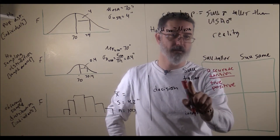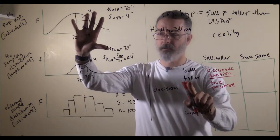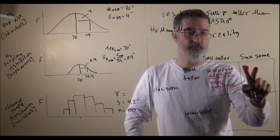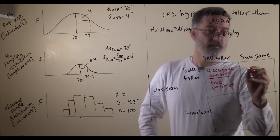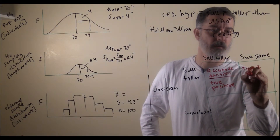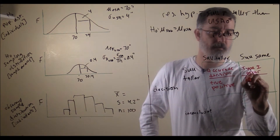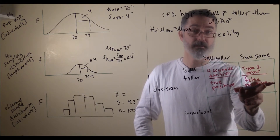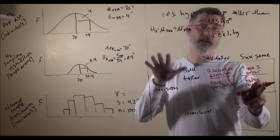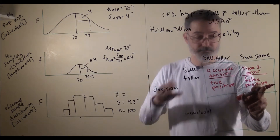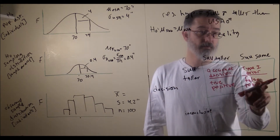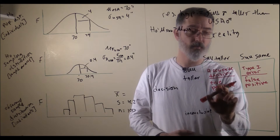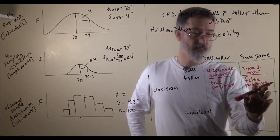But it is also possible that we could decide that SUU men are taller based on our statistical analysis, when in reality SUU men are just as tall as American men. In that case, we have made a decision error, and this one is called a type 1 error, also known as a false positive. When this happens, our data supports the research hypothesis, but in fact the research hypothesis is wrong. We make an incorrect decision about the world.